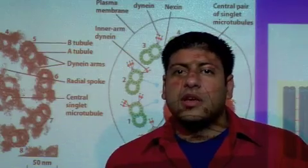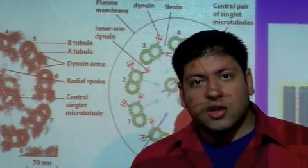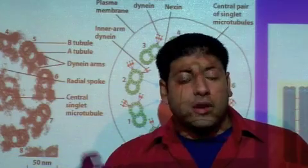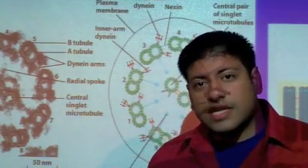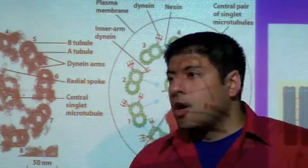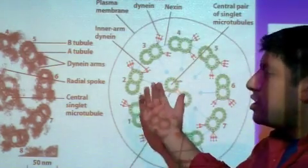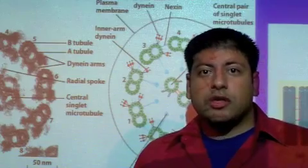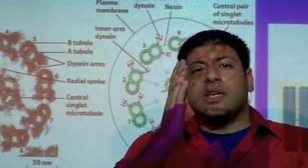What we're going to see now is that once the force gets generated, so when dynein interacts with the microtubule through a crossbridge-like cycle very similar to actin and myosin, we're going to see that this generation of force is going to cause movement between neighboring microtubule doublets.